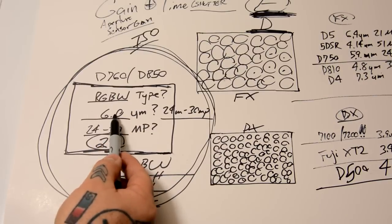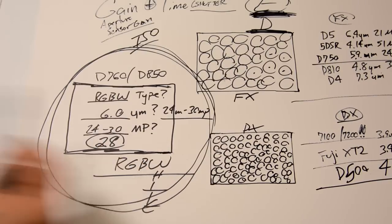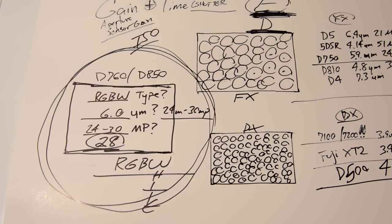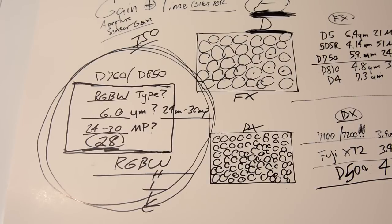And with these parameters, the RGBW sensor, the 6 micrometer pixel pitch, 24 to 30 megapixel, it will have crazy-ass high ISO performance, crazy-crazy-crazy-crazy-crazy low-light performance, the shadow detail.